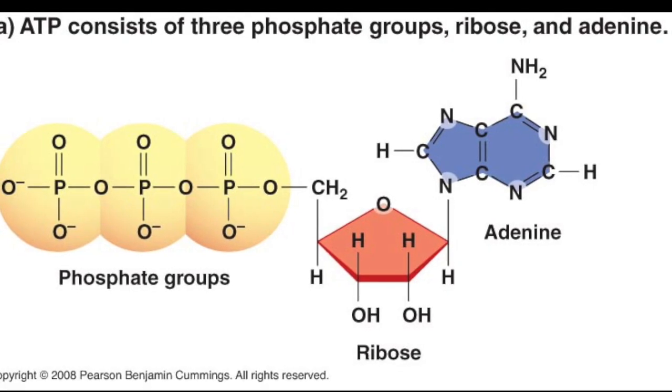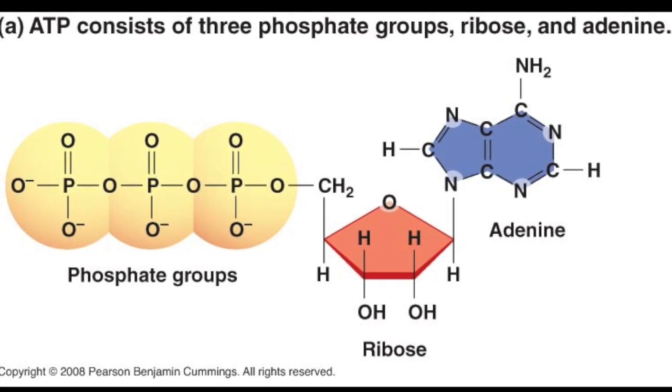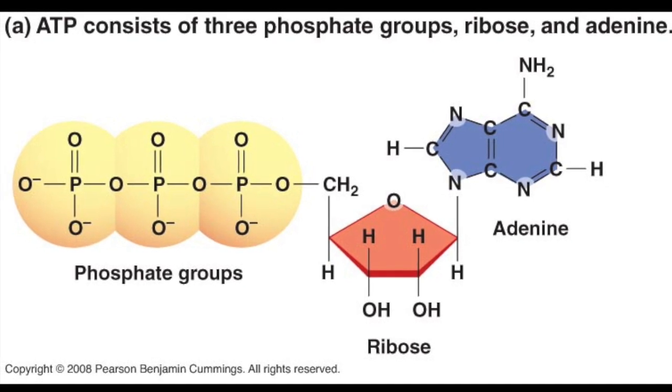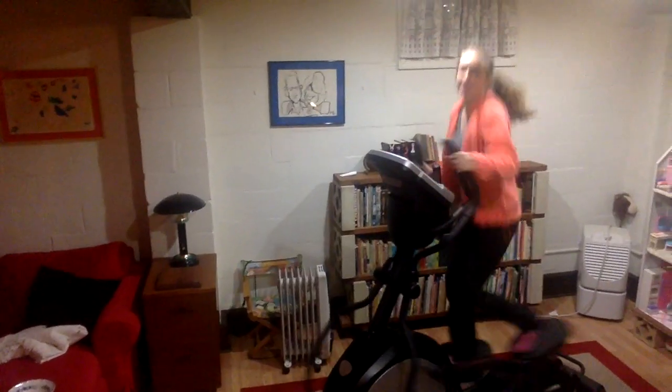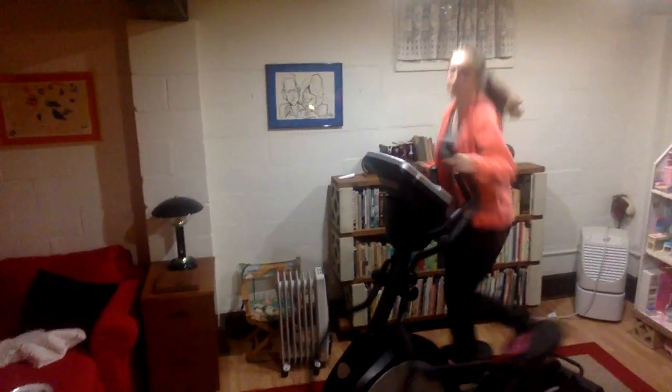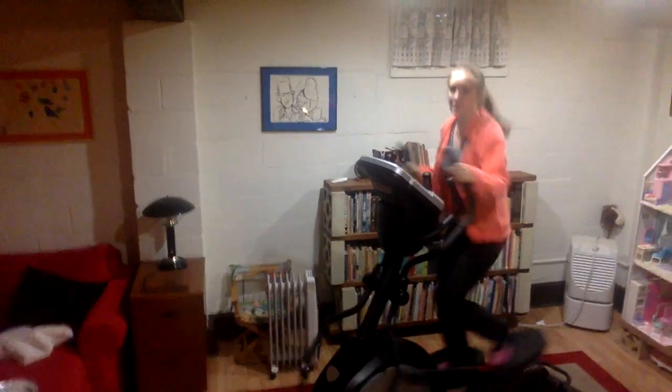ATP left over from the light reactions is used to power the Calvin cycle — now let's get into action.